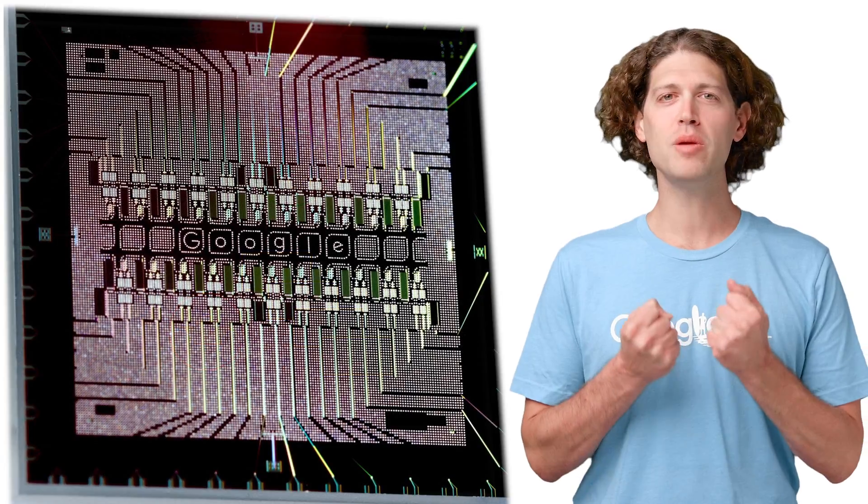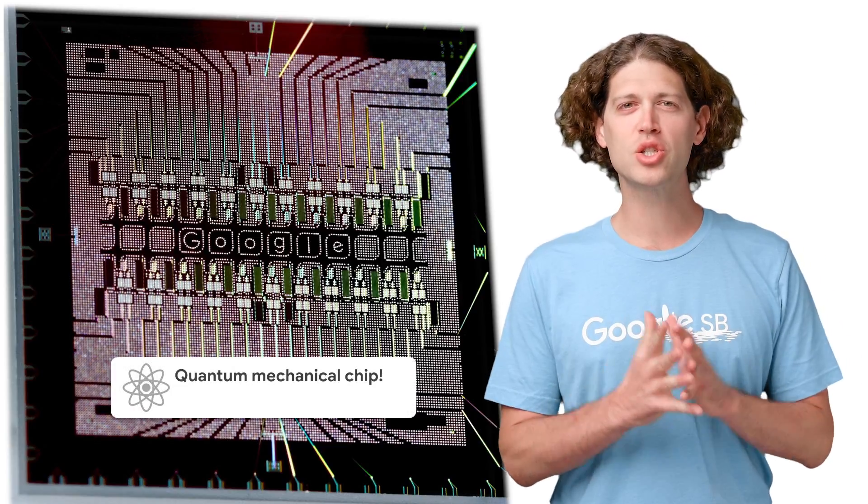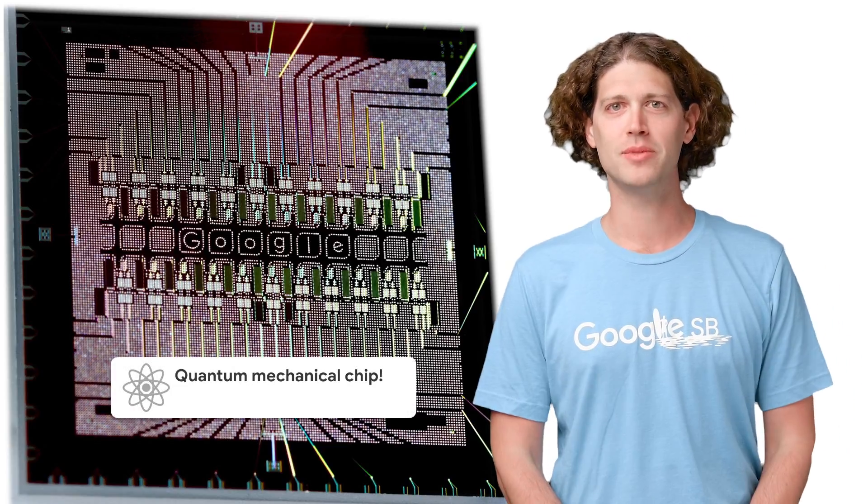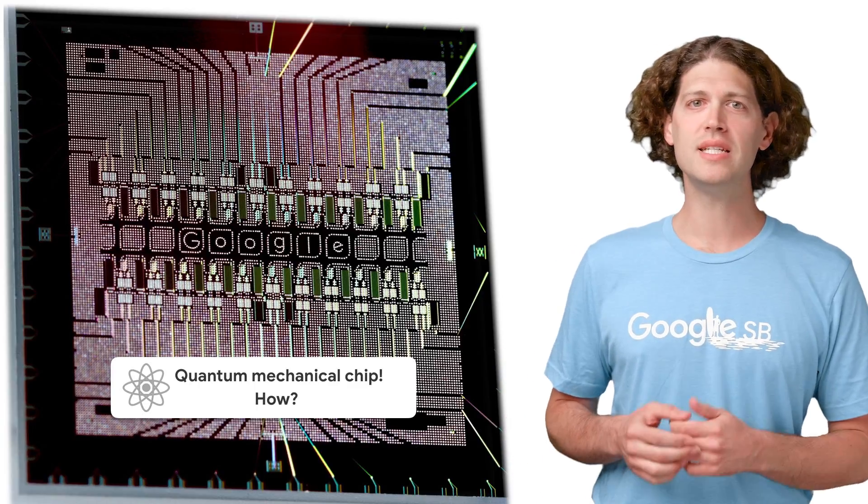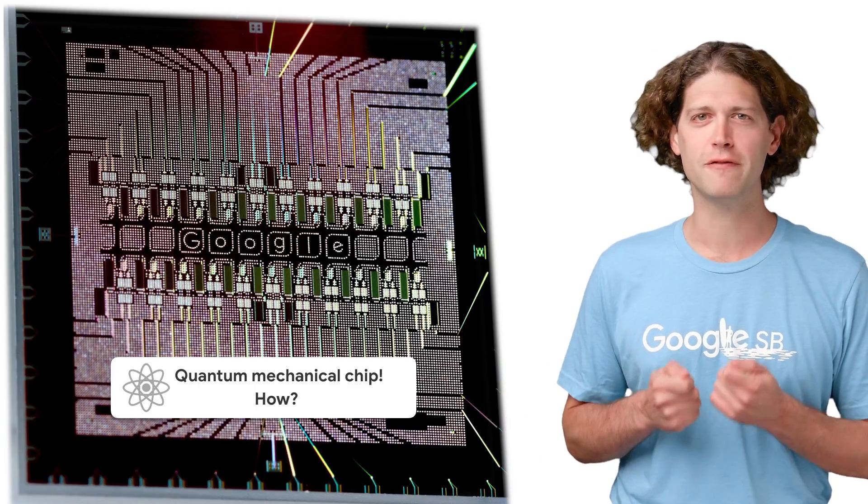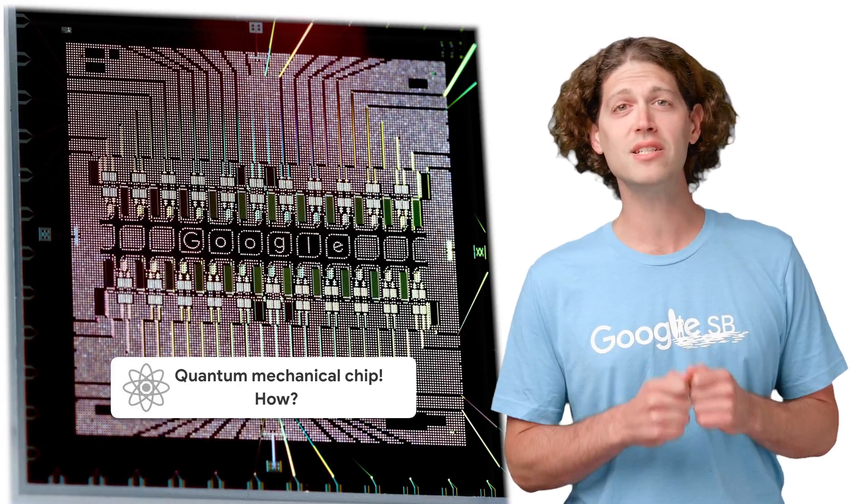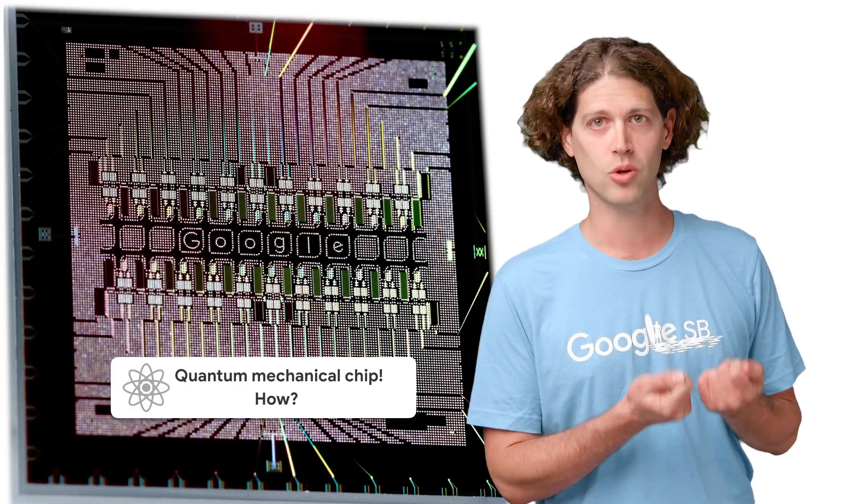We've discussed the computational difference between classical and quantum. But how do classical and quantum differ physically? How do we bring out quantum mechanics in our chip, which is so much bigger than the tiny atoms in which quantum mechanics was first discovered? Let's take a detailed look at classical bits at the physical level so that we can understand the physical difference between classical and quantum.